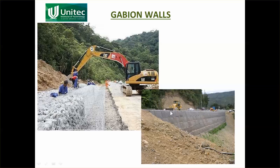On top of a gabion wall there can be a road. Gabion walls are also very useful for rivers, because if the foundation settles, the gabion wall will just move down with it, as opposed to a more rigid wall like a masonry wall, which will crack if the foundation moves.